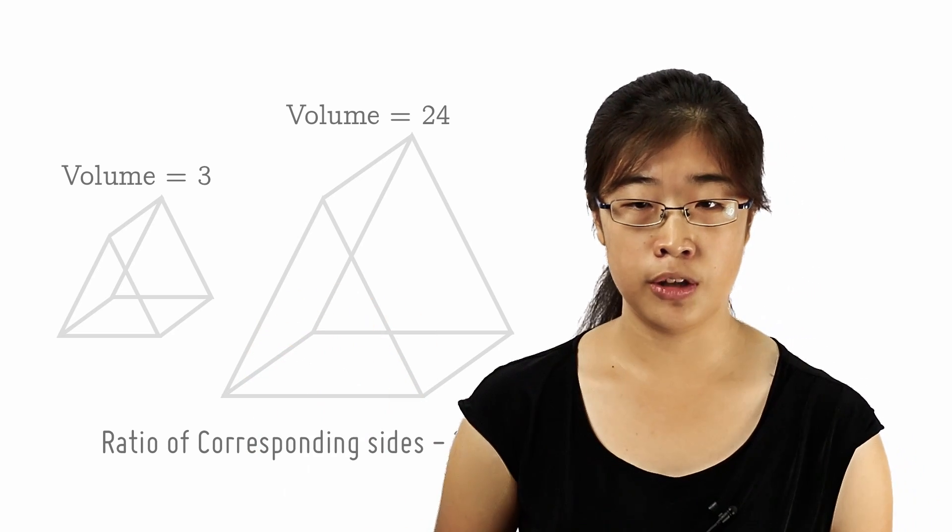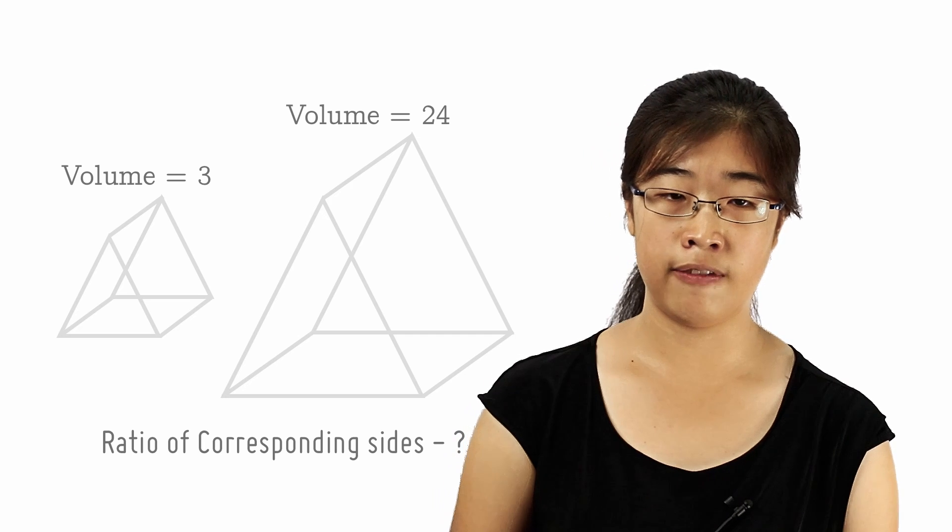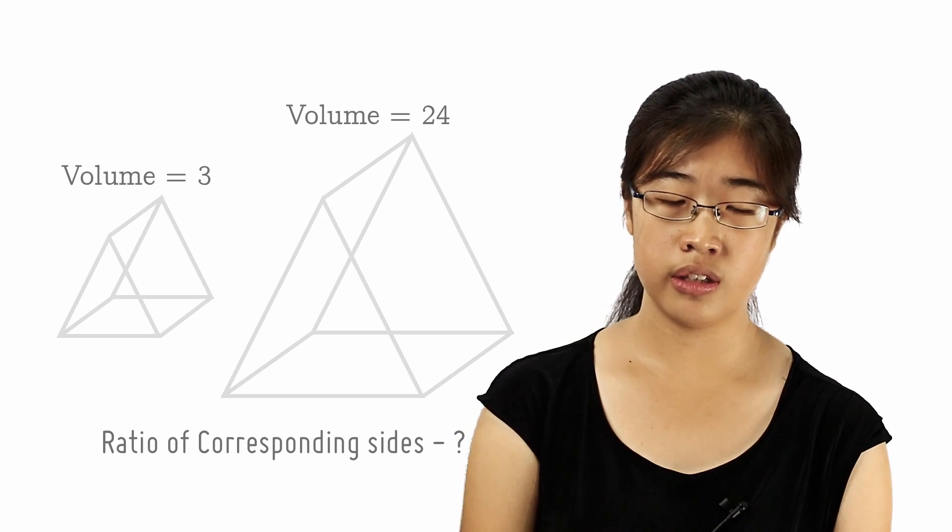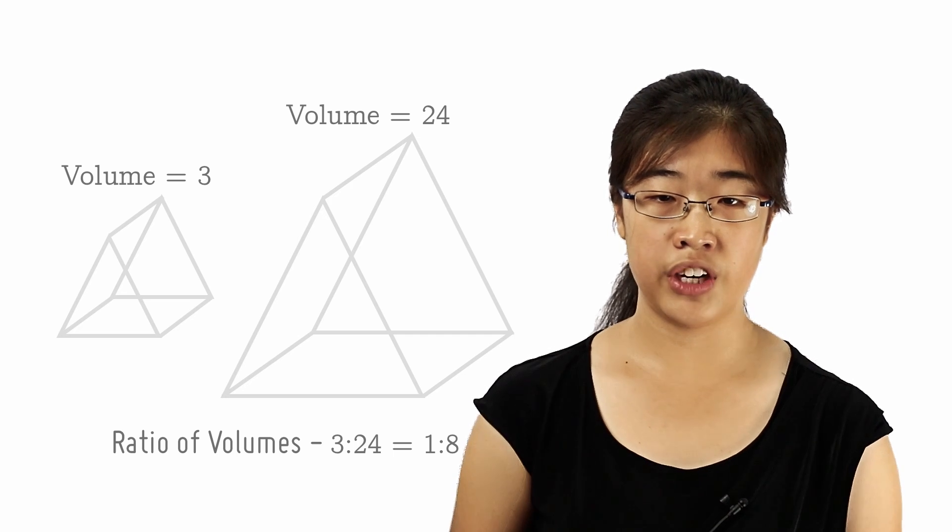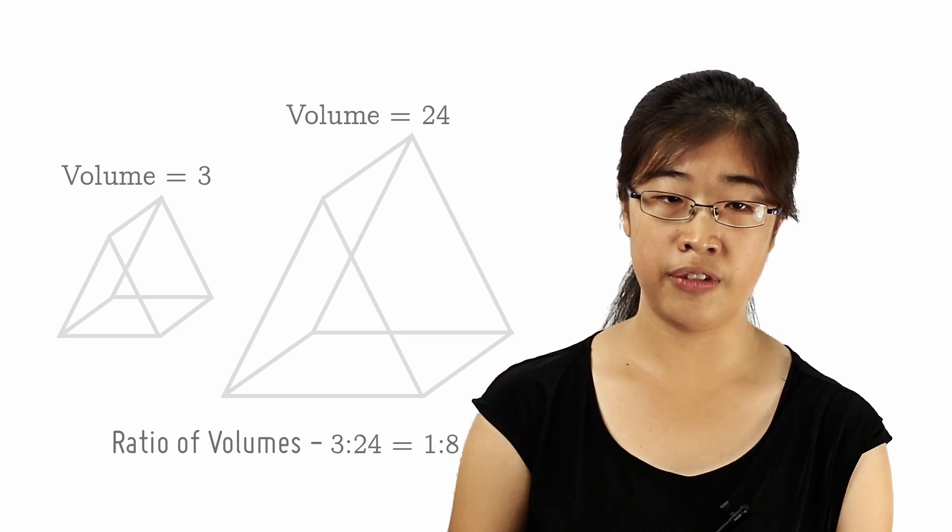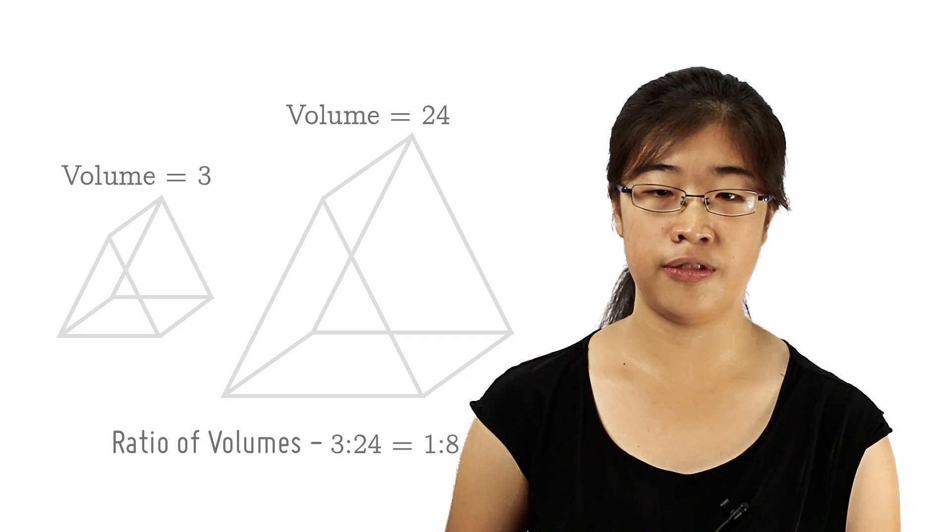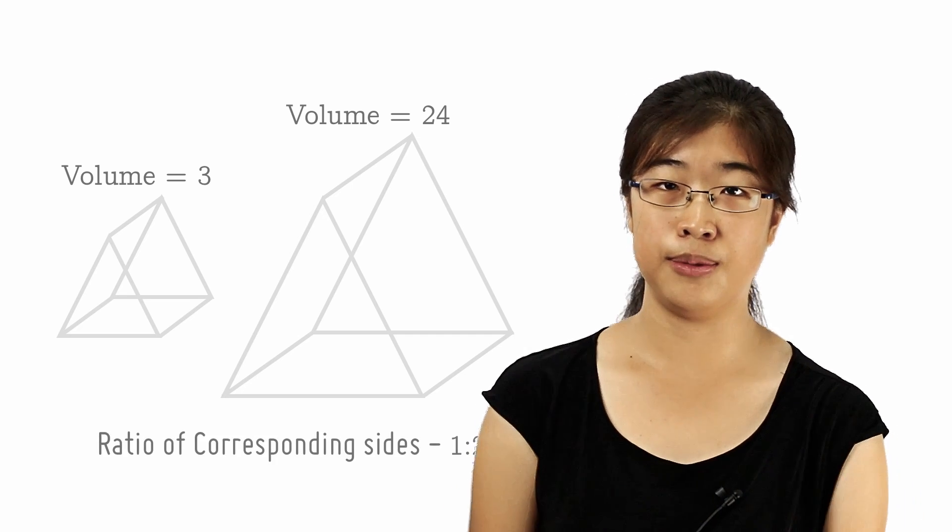We want to find the ratio of a pair of corresponding sides. Since we know both volumes, we can find the ratio of their volumes, which is 3 is to 24, or 1 is to 8. Since the ratio of the volume is cubed of the ratios of their corresponding sides, we know that the ratio of their corresponding sides is 1 is to 2.